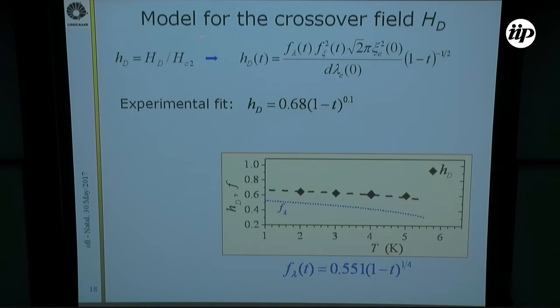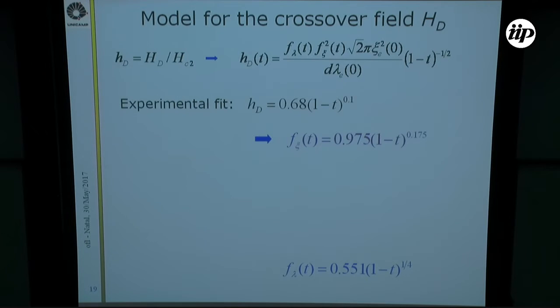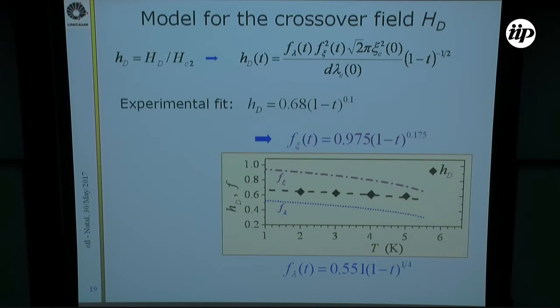As you increase temperature, it goes down slowly, almost an exponent of one-fourth. Another experimental property that we studied with this model was the reduced crossover field. That means normalizing it by HC2 values. This gives these experimental values that were also fitted by this expression. By combining this expression with the other definitions, the only function that is left to be determined is the f_xi, the other depletion parameter, that then gives this value and is plotted here.